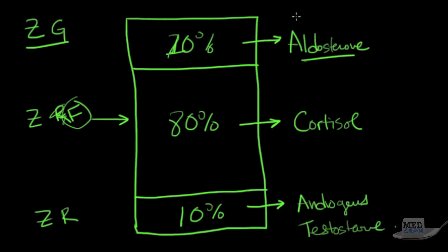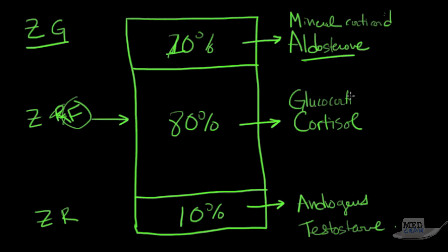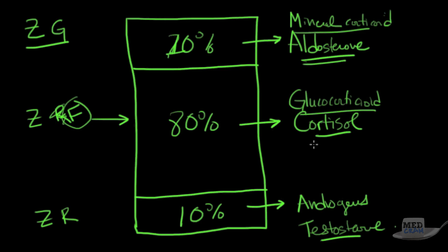Aldosterone is what's known as a mineralocorticoid, and cortisol is what's known as a glucocorticoid. So: the zona glomerulosa makes mineralocorticoids (specifically aldosterone), the zona fasciculata makes glucocorticoids (mainly cortisol), and the zona reticularis makes androgens (primarily testosterone).